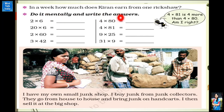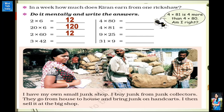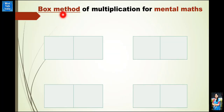Now try to do it mentally and write the answer. What is 2 times 6? 2 multiplied by 6 is 12. What is 20 times 6? 6 multiplied by 2 is 12 — or side में 1 zero — that is 120. What is 2 times 60? Again, 0 ko side me rakhke — 6 multiplied by 2 is 12 — or side me 1 zero — answer is 120. What is 3 multiplied by 42? We will expand 42 into ones and tens, which is 40 plus 2, and then multiply by 3.